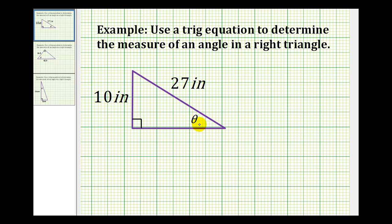Let's start by identifying what information we have. If this is angle theta, this side here would be the opposite side, and the side opposite the right angle would be the hypotenuse.